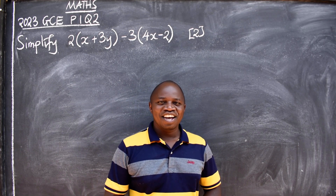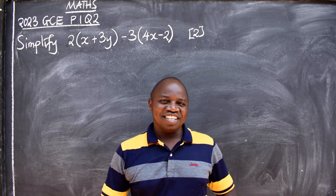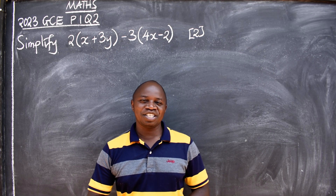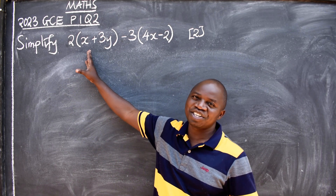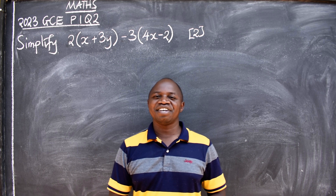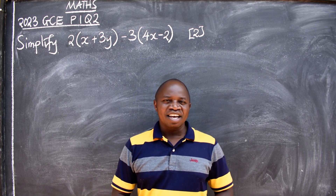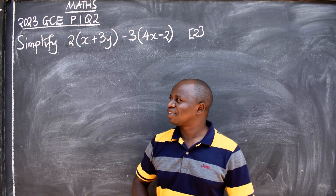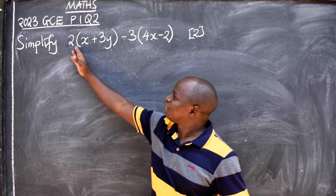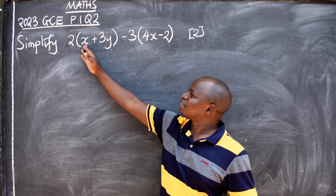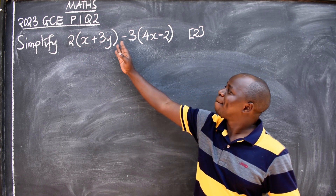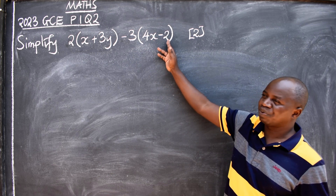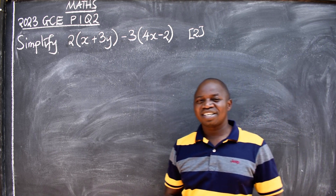Hello, good friends. Hope you are doing well. This is mathematics, and in this presentation we want to look at this interesting question coming from the 2023 GCE paper one. The question was question number two, which reads: simplify two brackets x plus three y minus three brackets on the other side, four x minus two. The number of marks allocated was two.